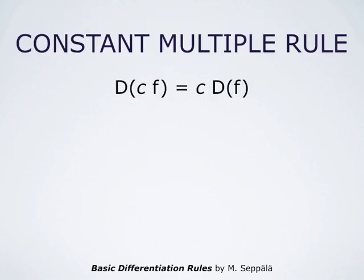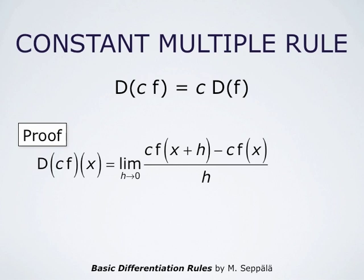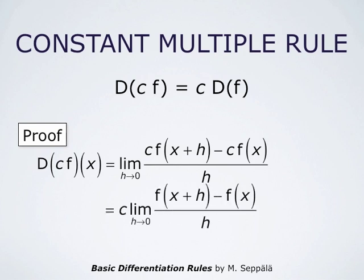The constant multiple rule says that the derivative of a constant c times the function f is c times the derivative of f. Using properties of limits: the derivative of c·f at x is the limit as h approaches 0 of (c·f(x+h) − c·f(x)) divided by h. Since c is a common factor in the numerator, it can be taken outside the limit, giving c times the limit as h approaches 0 of (f(x+h) − f(x))/h. This latter limit is the derivative of f at x, so we get c times f'(x). This proves the constant multiple rule.